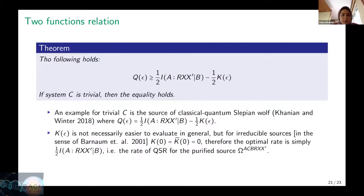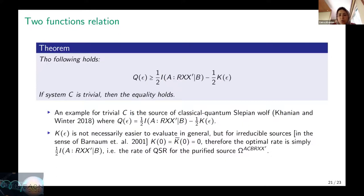If system C is trivial, we have equality. An example is the source considered with Winter in 2018, where we can show that q(ε) equals the mutual information minus one half of k(ε). The function k(ε) is not necessarily easier to evaluate, but for irreducible sources we can show that the limit of the function at zero equals the value of the function, and both are zero. By irreducible sources, we mean ensembles where source states don't fall into two or more orthogonal subspaces — we cannot read the identity of the states from the ensemble. For such sources, the optimal compression rate equals the mutual information for the conventional quantum state redistribution of the purified state.